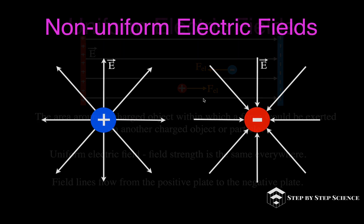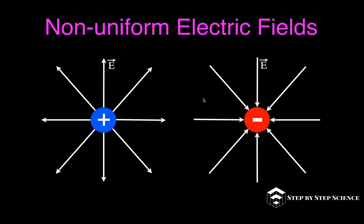That is different from a non-uniform field around a point charge. These are non-uniform electric fields because the closer you are to the charged particle, the closer the lines are together — an indication that the field strength is stronger closer to the particle. The farther away you get, the greater the spacing between the field lines, indicating the field strength decreases as you move away.